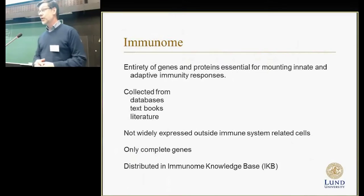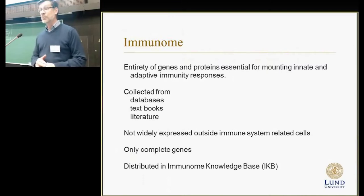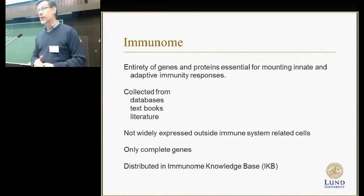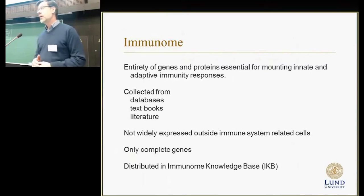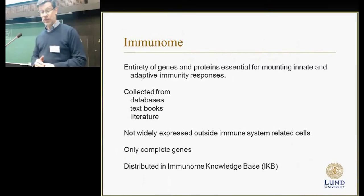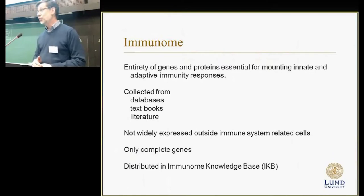We have strict criteria for what belongs to the immune system. These proteins have to be expressed in immune system-related cells and not outside them. We are also looking only at complete genes, so we left out all the B and T cell receptors, MHC systems, and so on. All this data is available in a dedicated database called IKB, the Immuno Knowledge Base.